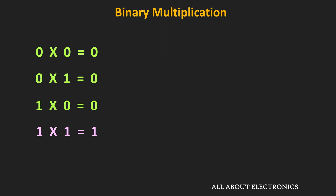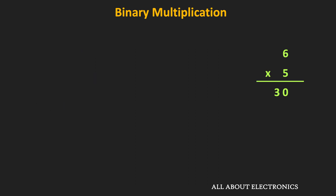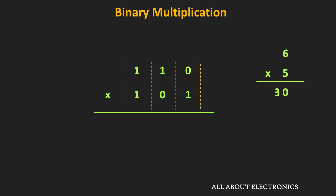Let us take one example and understand the procedure of binary multiplication. So let's say we want to multiply 6 and 5 in the binary number system. In binary, 6 is equal to 110, while 5 is equal to 101. To perform binary multiplication, starting from the LSB of the multiplier, we will multiply each digit with the multiplicand.